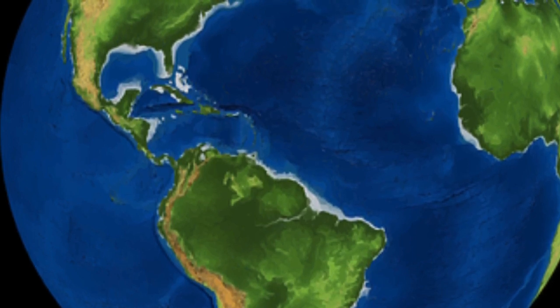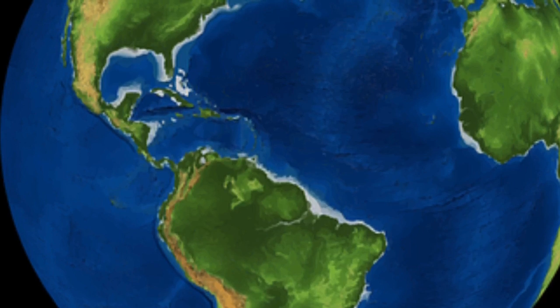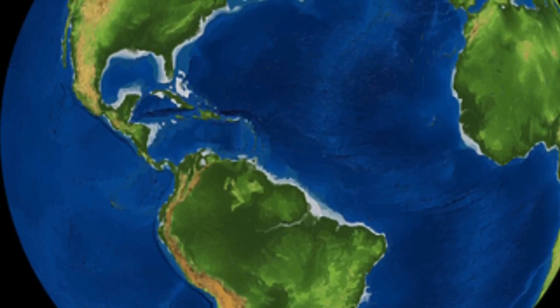If humans were to go extinct today, the Earth would still rotate. The sun would still rise and set, and so would the moon. The plants and animals would continue to survive.